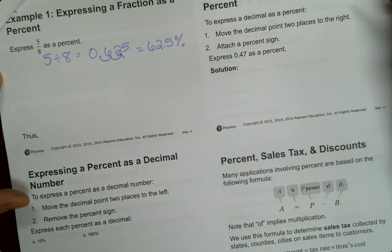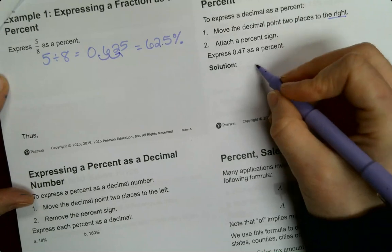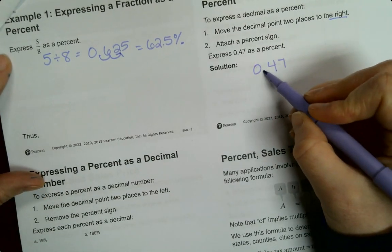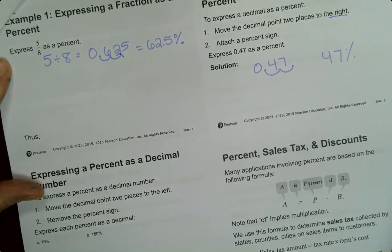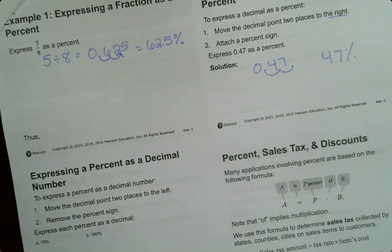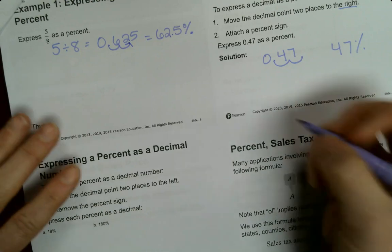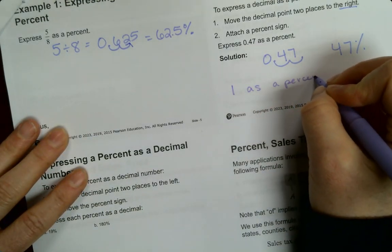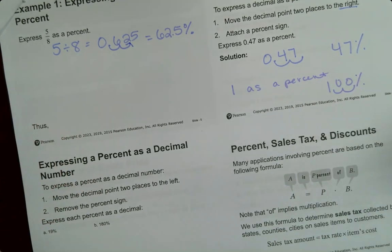Express the decimal as a percent. You're going to move the decimal two places to the right. So 0.47 as a percent, we are going to go two places, and that means it's 47%. 0.50 as a percent would be 50%. One, if you have one as a percent, that would be 100% because you've moved over two places.